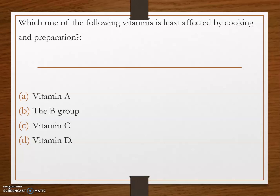Next question: which one of the following vitamins is least affected by cooking and preparation? Options are: option A, vitamin A; option B, the vitamin B group; option C, vitamin C; and option D, vitamin D. The answer is vitamin D. Fat-soluble vitamins are more stable than water-soluble vitamins, and vitamin D is a fat-soluble vitamin. Comparing vitamin A and D, vitamin D is more stable and is least affected by cooking and preparation.